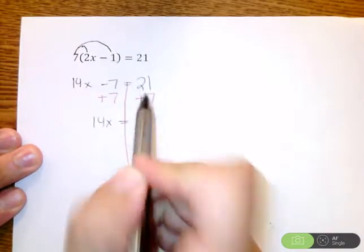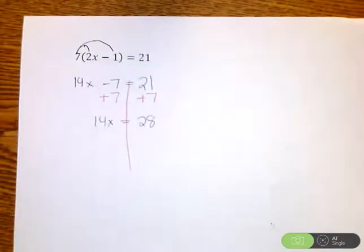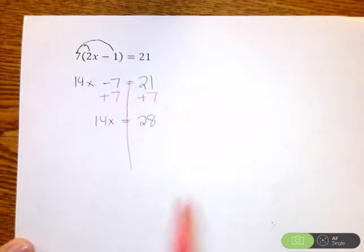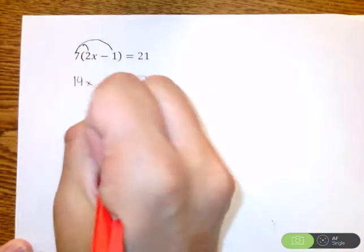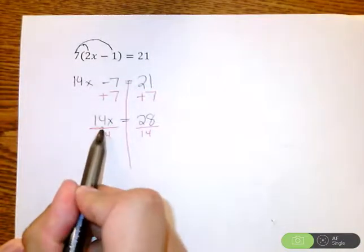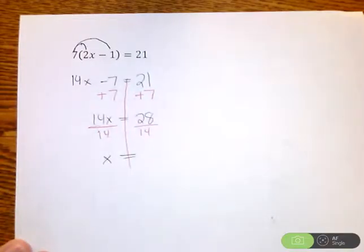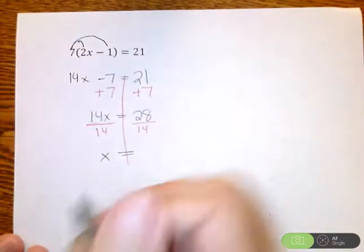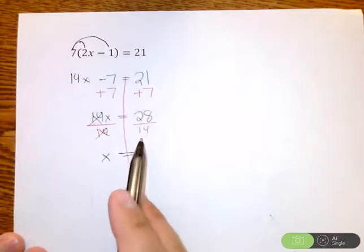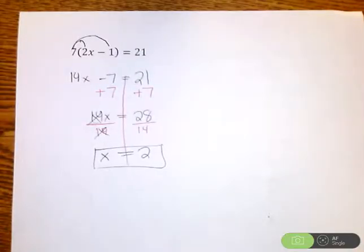And on the right side, 21 plus 7 is 28. Almost there. When you see that 14x, that means 14 times x. The opposite of multiplying by 14 is dividing by 14 on each side. When you multiply and divide by 14, those divide to 1, so we just get an x. Again, most students, they'll say they cancel there. That's fine. On the right side, 28 divided by 14, that is 2. So we get x equals 2.